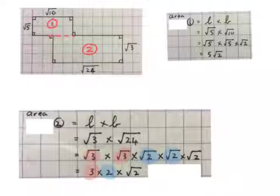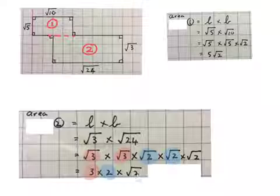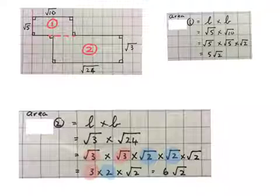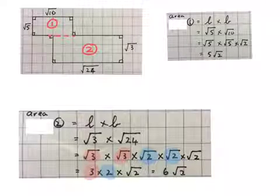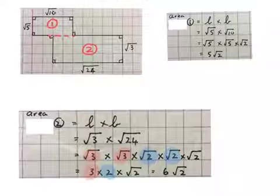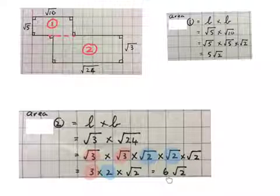And I'll just keep the square root of 2 behind. So the final answer will be 6 square root of 2. The area of this second rectangle is 6 square root of 2.